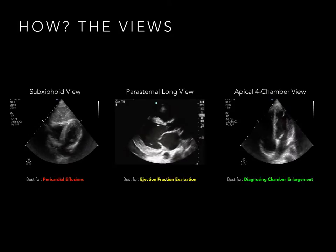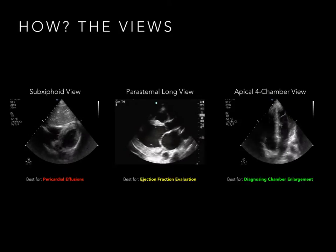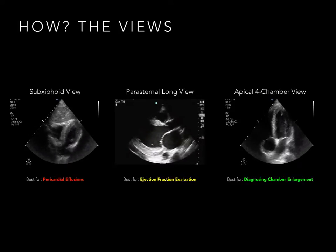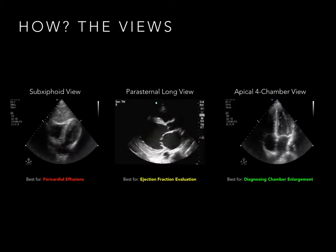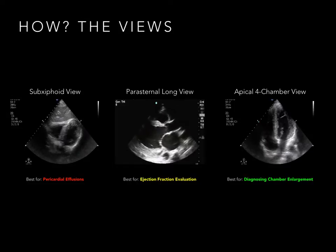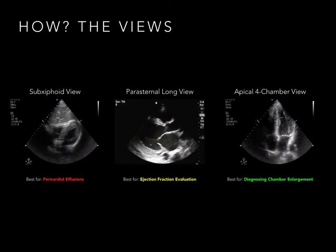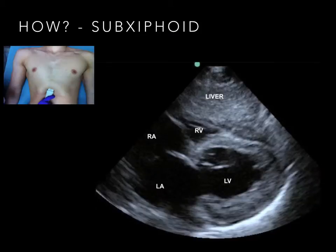This may be review, but it never hurts to recap. Let's quickly discuss how to obtain the different heart views. For the subxiphoid view, place the probe with probe marker pointing to the patient's right side, midline in the subxiphoid space.